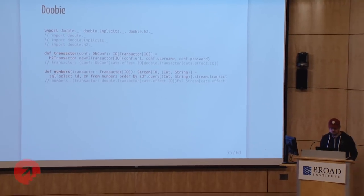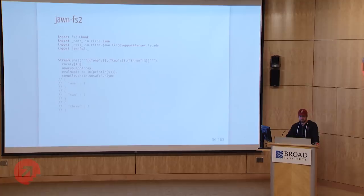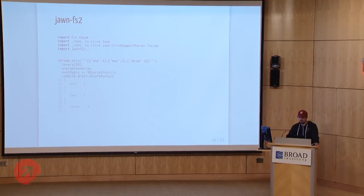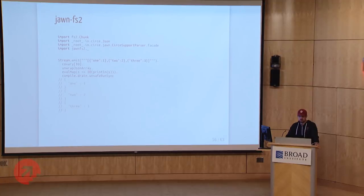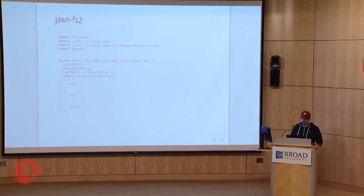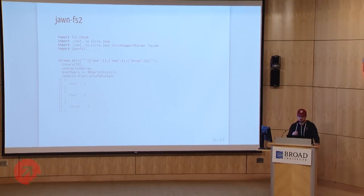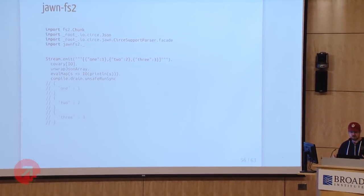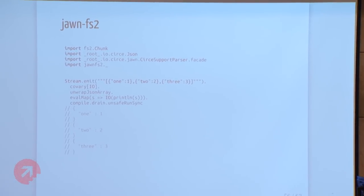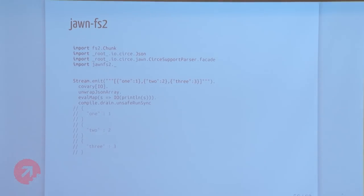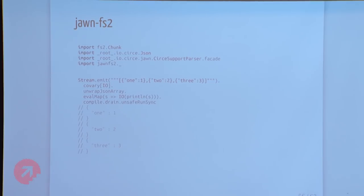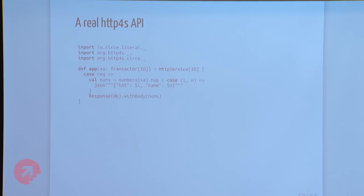Jawn-FS2 is a little library that I wrote. Jawn, from Eric Ostheim, is an incremental JSON parser. Very often you'll have very large JSON bodies wrapped inside an array or new-line delimited, and you can parse those incrementally. I wrote a wrapper around Jawn that takes that incremental output and turns it into an FS2 stream. We're able to print those out one by one as we parse.